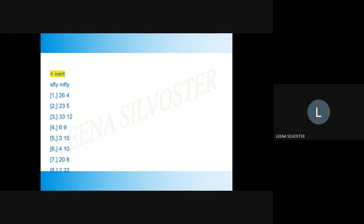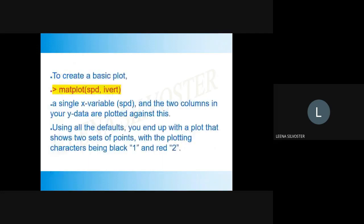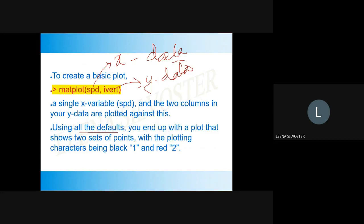An example uses the IVERT database, which is a default database containing two columns: Sfly and Mfly (stone fly and mayfly). Another database SPD contains speed as a column vector. To create a basic plot, you need two variables: x data and y data are the minimum required arguments. A single x variable and two columns in the y data are plotted using all defaults, with plotting characters being black circle (1) and red triangle (2).